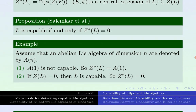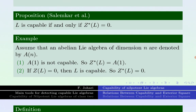For example, assume that an abelian algebra of dimension N is denoted by A_n. A_1 is not capable, so the epicenter of A_1 is equal to A_1. If L has a trivial center, then L is capable and the epicenter of L is trivial.